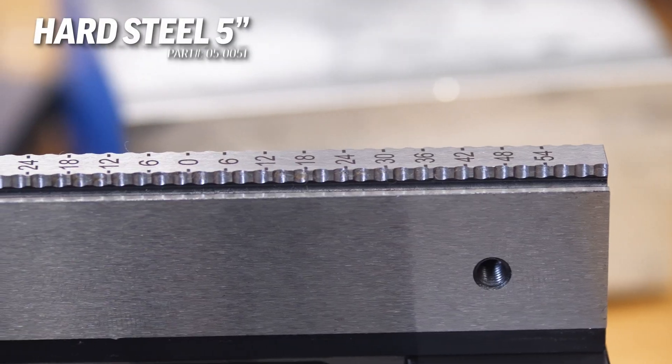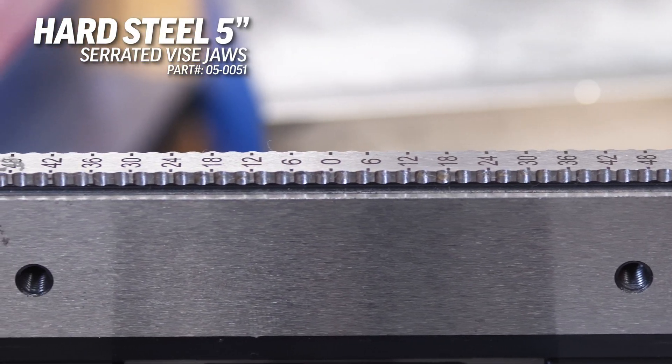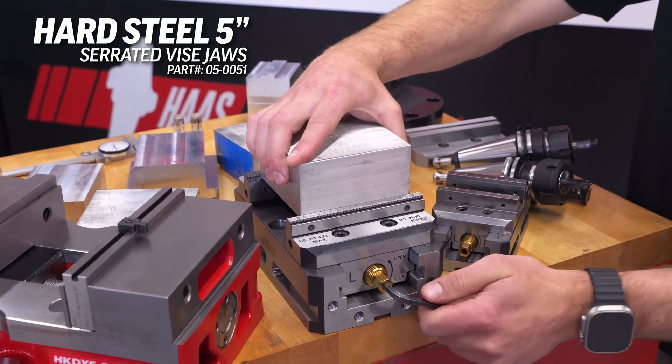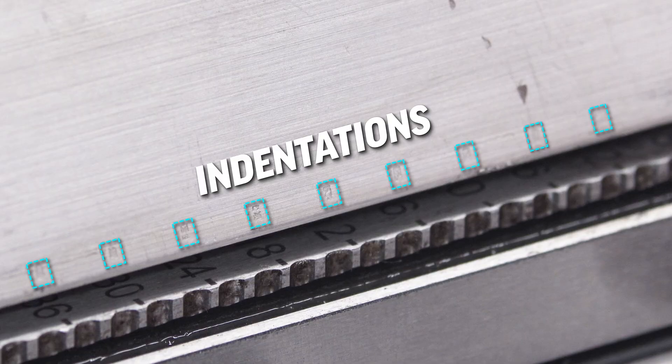Using serrated jaws like these can help, but they only work well in softer materials and it's still possible to have the work piece move around since the indentations they leave aren't that deep.